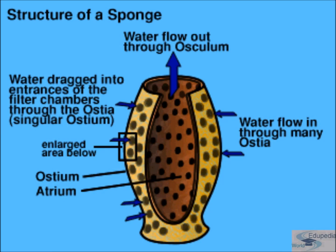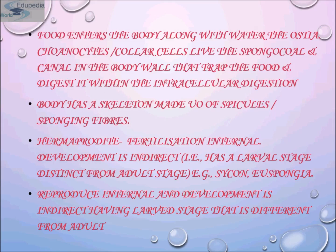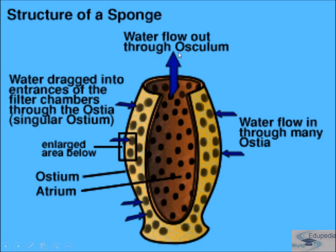In the water transport system of sponges, water enters through minute pores called ostia in the body wall into the central cavity, the spongocoel, from where it goes out through the osculum. Water is drawn into the entrance of the filter chamber through the ostia.